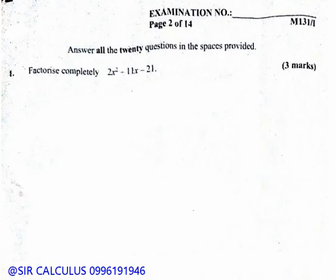In this video, we have a question from Mathematics Paper 1. The question reads: Factorize completely 2x squared minus 11x minus 21.